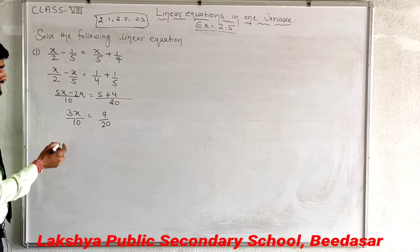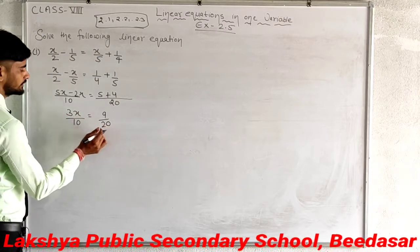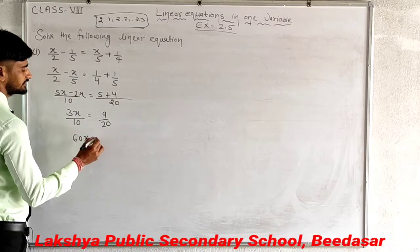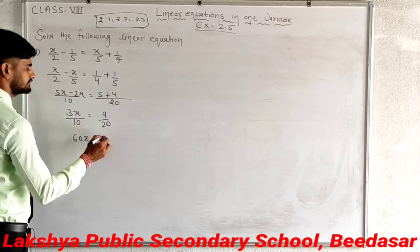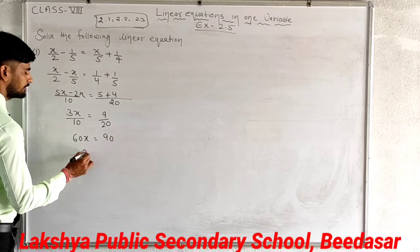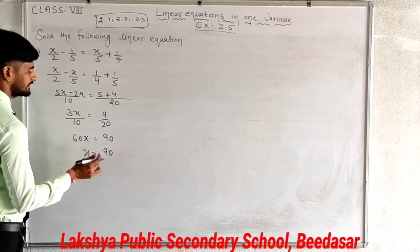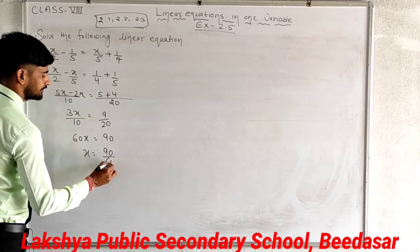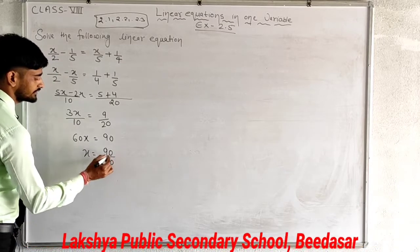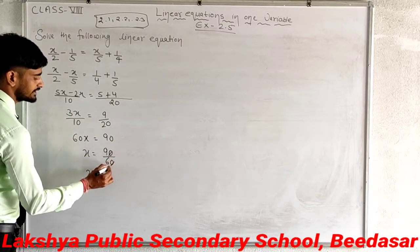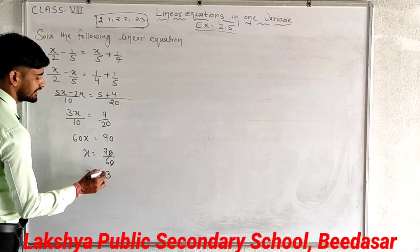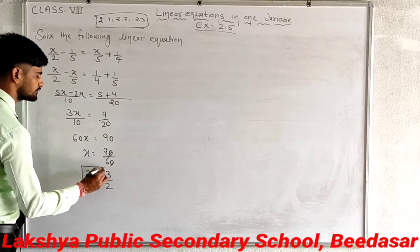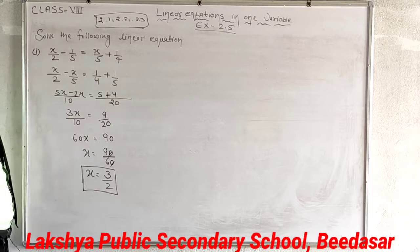Now cross multiply: 3x into 20 gives 60x, equal to 10 into 9, which is 90. Then x equals 90 divided by 60. Cancelling, x equals 3 upon 2, which is your answer.